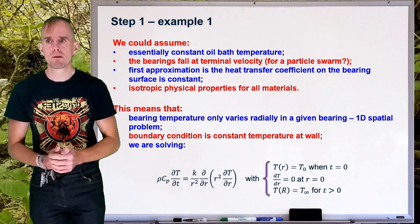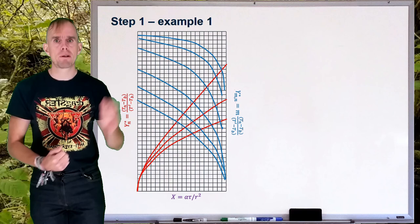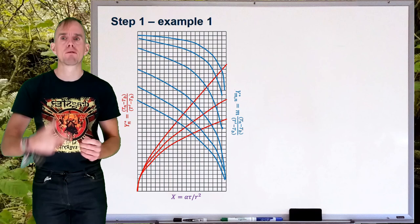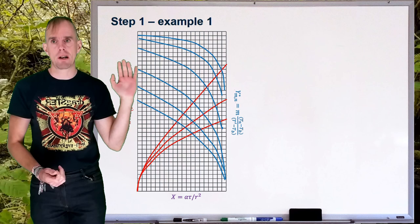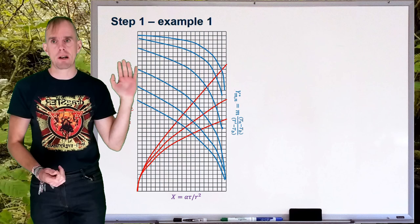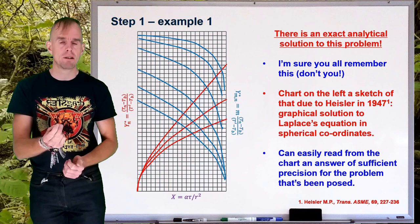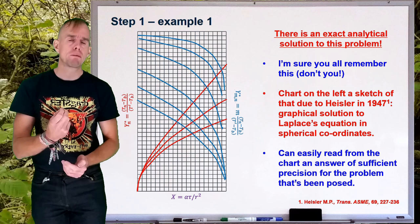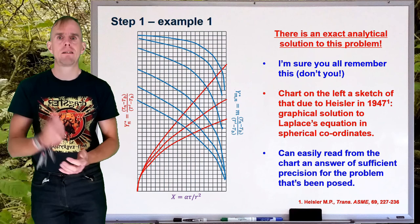We can solve this analytically. We don't need a computer. On the whiteboard in front of you, I've put a sketch of a Heisler chart. A Heisler chart is a graphical representation of the solution in spherical coordinates of that equation I've just put down. Or, you could go and solve that equation directly using spherical harmonics. So, don't forget there are such things as exact analytical solutions. I'm sure you remember this. But, why use computational methods to get an approximate answer, when with a little thought, you can use existing solutions to analytical equations to get an exact answer?